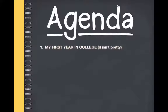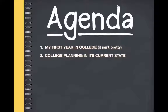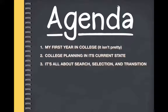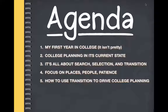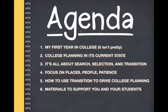Let's go through the agenda of what I'm going to be covering today — there's a lot to cover. I want to begin by sharing a little bit about my first year in college, because it was miserable and awful — and this is why I do what I do. Then we'll reflect on college planning in its current state and why there are some big problems we can address. We'll turn into search, selection, and transition, with transition being the big focus. Then a layer deeper: places, people, and patience, and how to use transition to really drive college search.